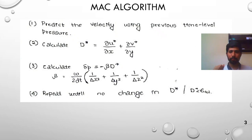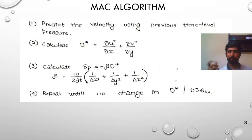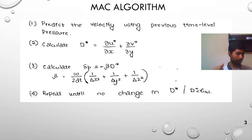The third challenge is pressure-velocity decoupling that arises when using a collocated grid — the common grid where all variables are stored at the center of the control volume. In the momentum equation, the predicted velocity doesn't depend on the pressure at that control volume, which is unphysical. This is solved using a staggered grid approach, as discussed last week.